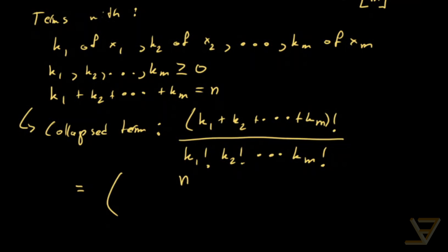Now you know why it's called the multinomial coefficient. And at the top, because it's this sum here, and at the bottom, we have k1 comma k2, all the way through to km.